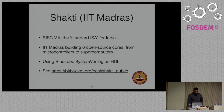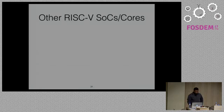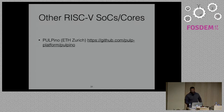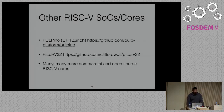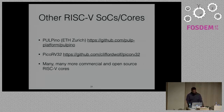Some other RISC-V SOCs and cores available: PulpiNo from ETH Zurich, and PicoRV32 from Cliff Wolf — meant to be a really size-optimized 32-bit RISC-V implementation. There are a lot of other commercial and open source RISC-V cores out there — too many to name. It seems like there's a new RISC-V core popping up every day, with a lot of hackers trying to build their own core, which is pretty cool because RISC-V is an open standard.